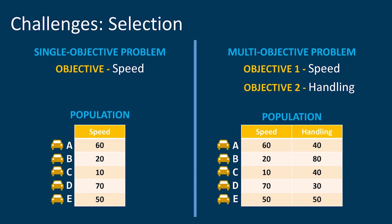Let's compare two populations of solutions — one to a single objective problem and one to a multi-objective problem. Our single objective problem will be looking for a vehicle with only the fastest speed. Our multi-objective problem will be looking for a vehicle with the fastest speed and the best handling. This is a multi-objective problem.